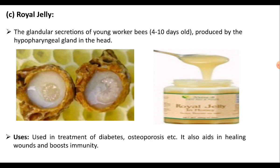The next product is royal jelly. It is the glandular secretion of young worker bees, produced during the 14 to 10 days old worker bee stage, by the hypopharyngeal gland in the head of worker bees. Royal jelly is used in the treatment of diabetes and osteoporosis, and it also aids in healing wounds and boosts immunity.